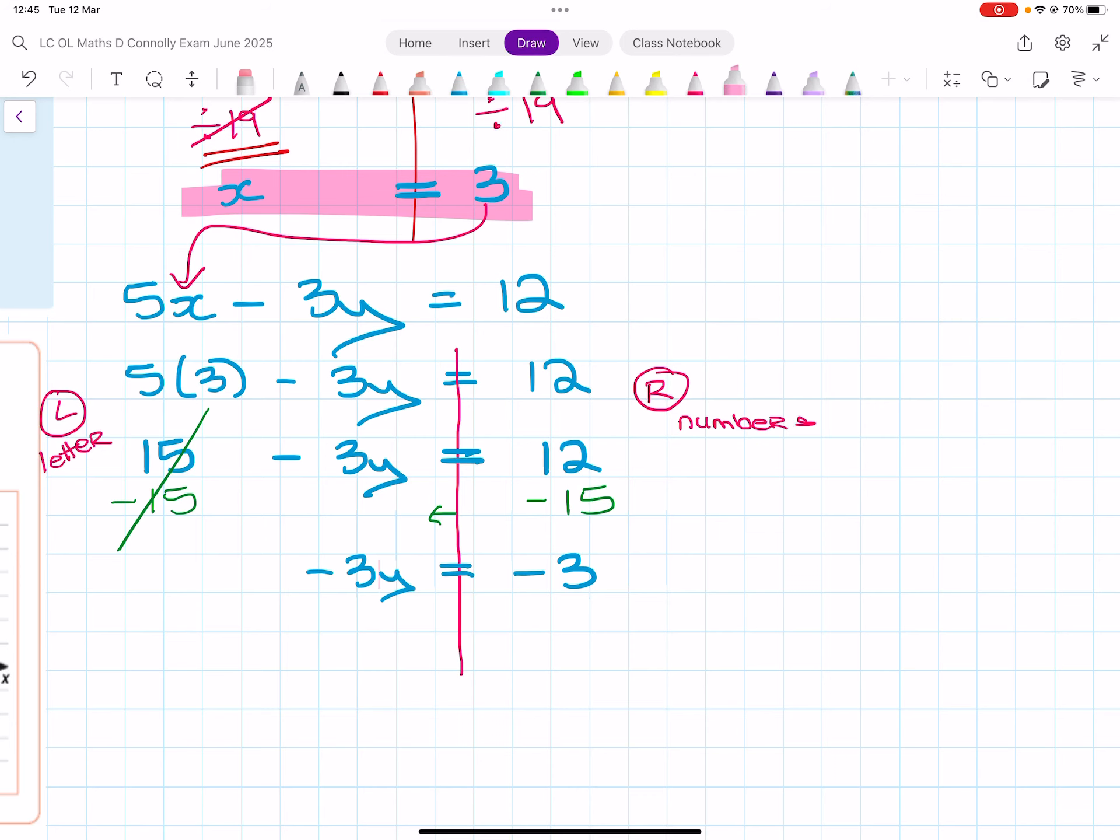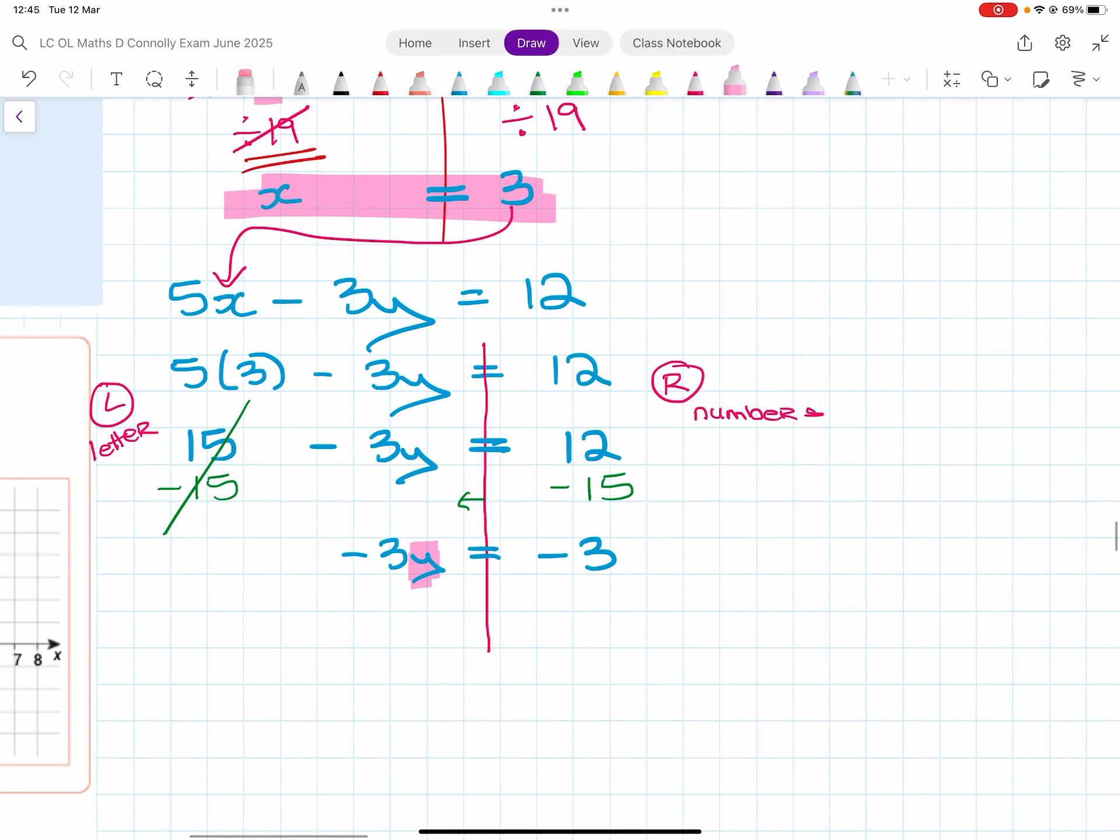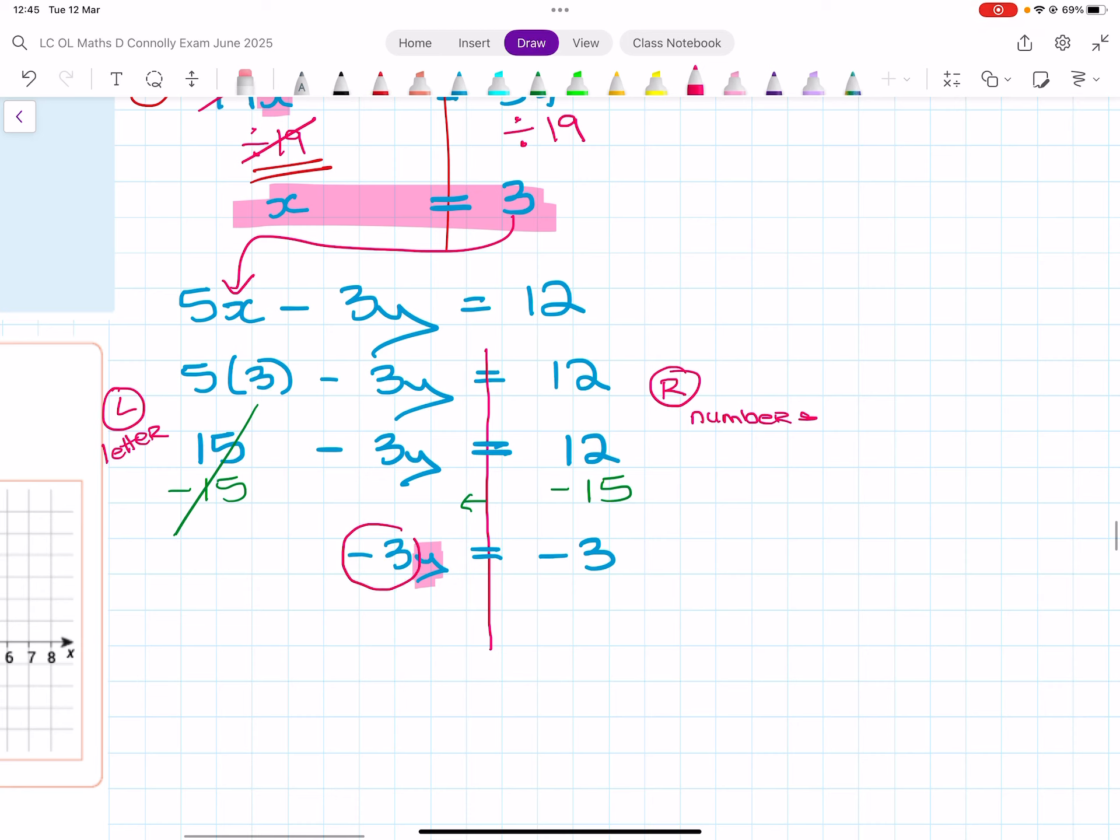I want to keep the y and get rid of the minus 3. So if you're separating a number from a letter, you need to use division. You have to divide by exactly what's in front of the letter so that you get rid of all of it and only leave the y behind.